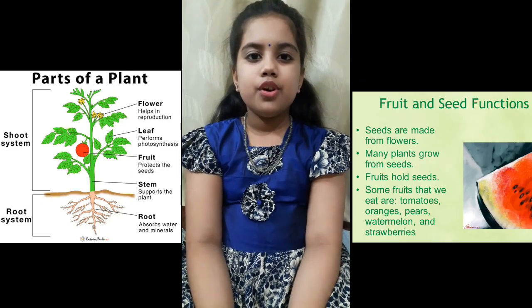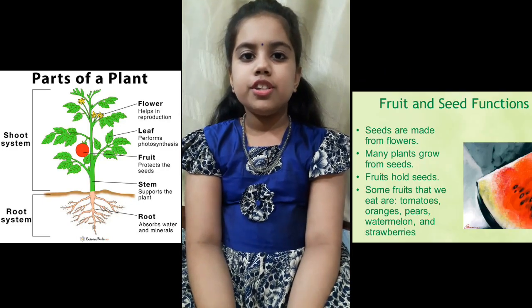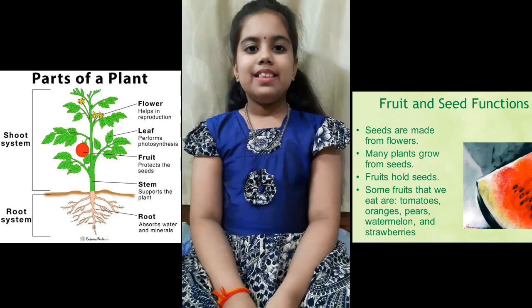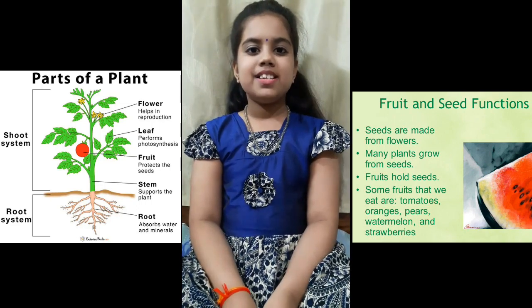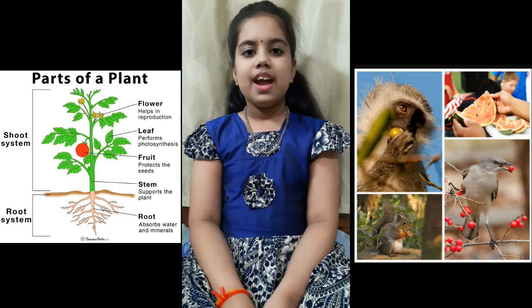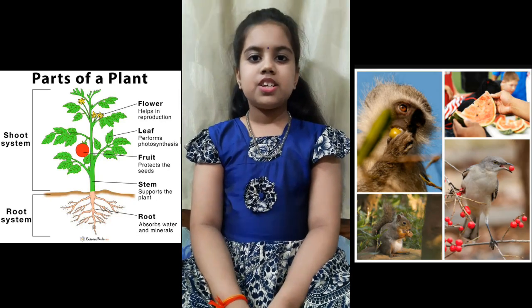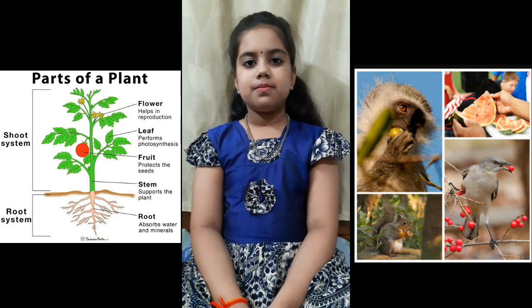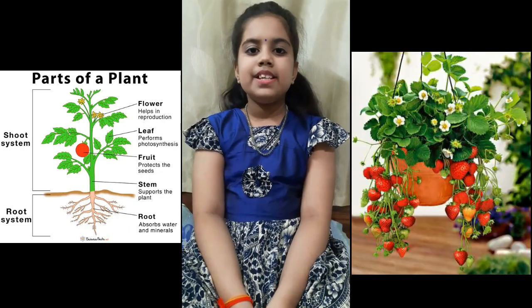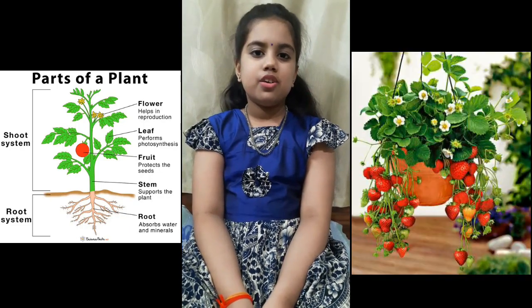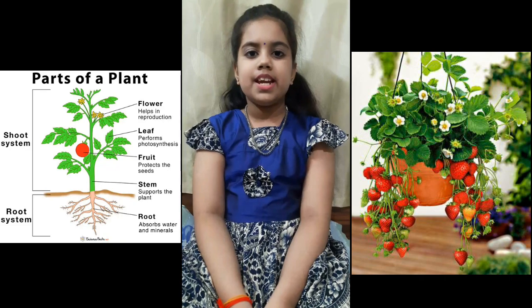Next one is fruit. Fruits protect seeds. They help plants spread seeds out because animals transport and discard seeds when they eat fruits. An example is strawberry. Most plants grow from a seed.